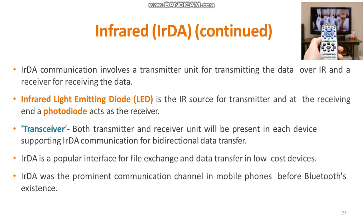This communication involves a transmitter unit for transmitting and a receiver for receiving the data. For the transmitting unit we have the infrared LED as the IR source, and for receiving we have the photodiode as a receiver. If both transmitter and receiver are present in each device, it is responsible for bidirectional data transfer, and that device is called a transceiver.